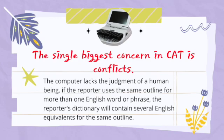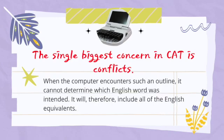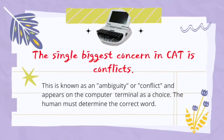However, the single biggest concern in CAT is conflicts. The computer lacks the judgment of a human being. If the reporter uses the same outline for more than one English word or phrase, the reporter's dictionary will contain several English equivalents for that outline. When the computer encounters such an outline it cannot determine which English word was intended, and it will include all of the English equivalents. This is known as an ambiguity or conflict, and it appears on the computer terminal as a choice — the human must then determine the correct word.